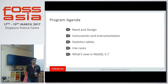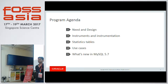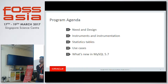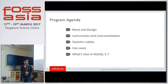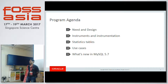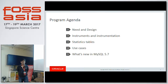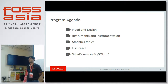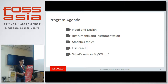This is the agenda for today's talk. I will talk about the need and design of Performance Schema, starting from why we need it. Then I will talk about instruments and instrumentation points, the statistics tables, and use cases. I'll also cover what's new in MySQL 5.7, released GA in 2015, and what we have in MySQL 8.0, for which one DMR has been released.